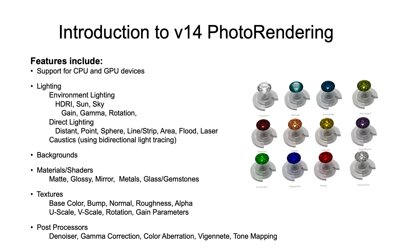There continues to be a large texture library that you can drag and drop onto your models, including textures and image maps for your base or diffuse color, bump, normal, roughness, or alpha mask. Your textures include the ability to adjust the UV scaling, rotation, or gain parameters.